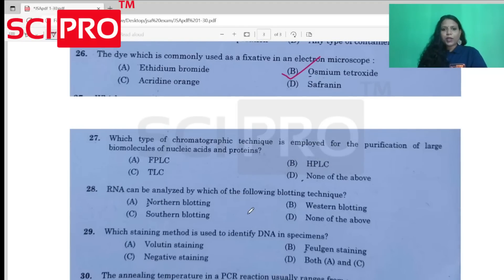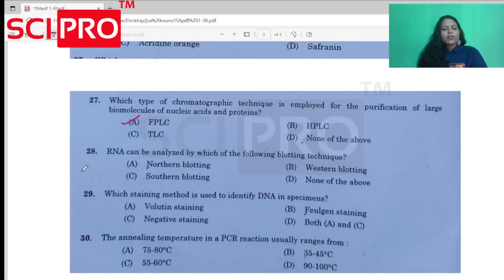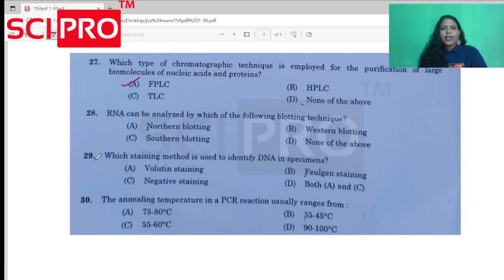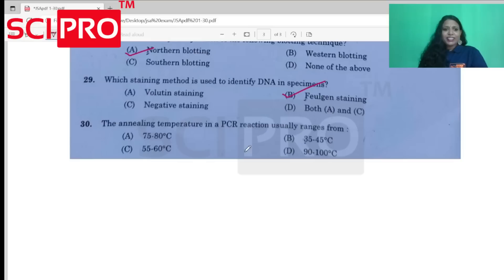Question number 25: Which type of chromatographic technique is employed for the purification of large biomolecules of nucleic acid and proteins? FPLC. Which type of chromatographic technique is used to identify DNA in specimens? Feulgen stain. Annealing temperature: 55 to 60. Thank you.